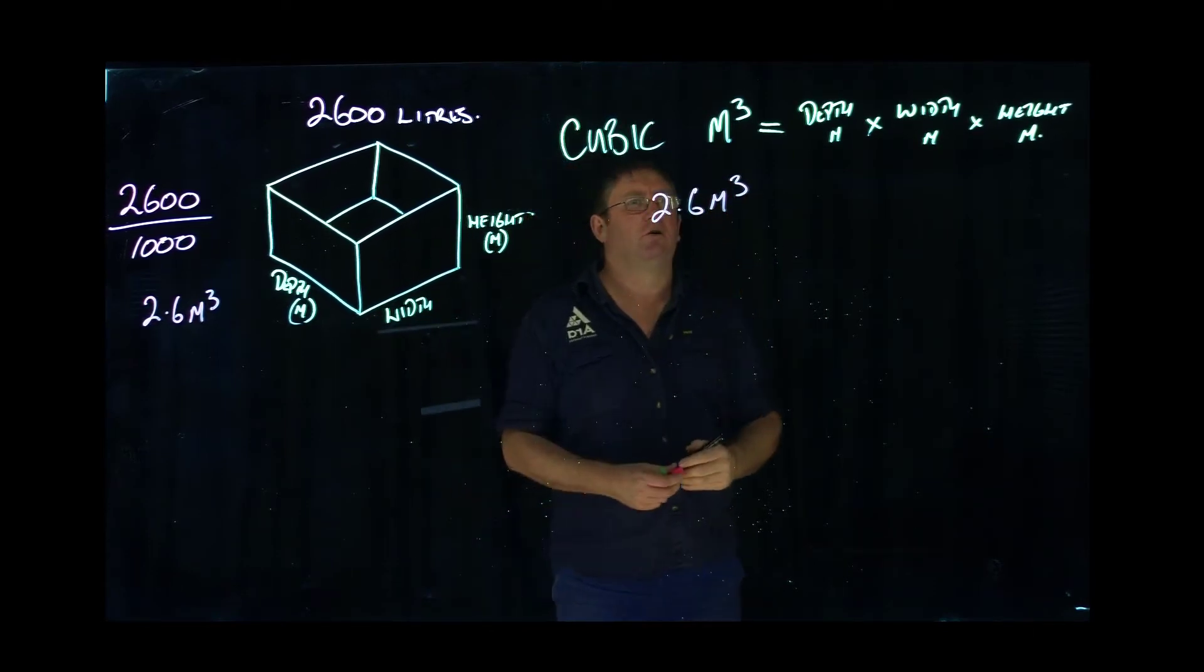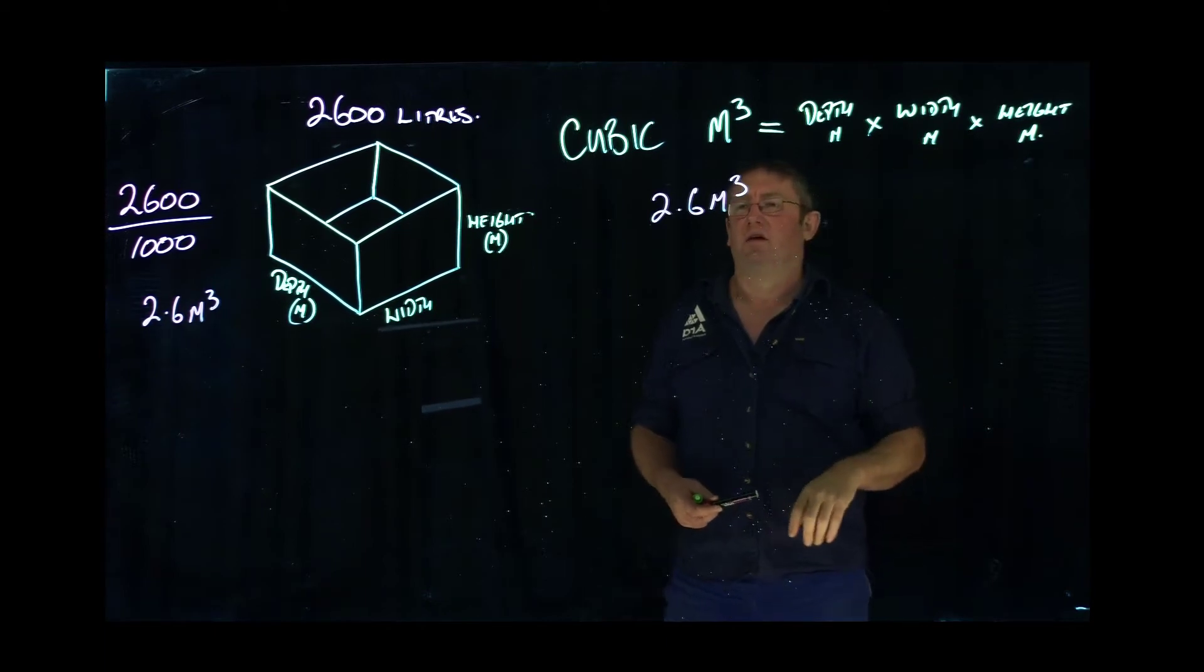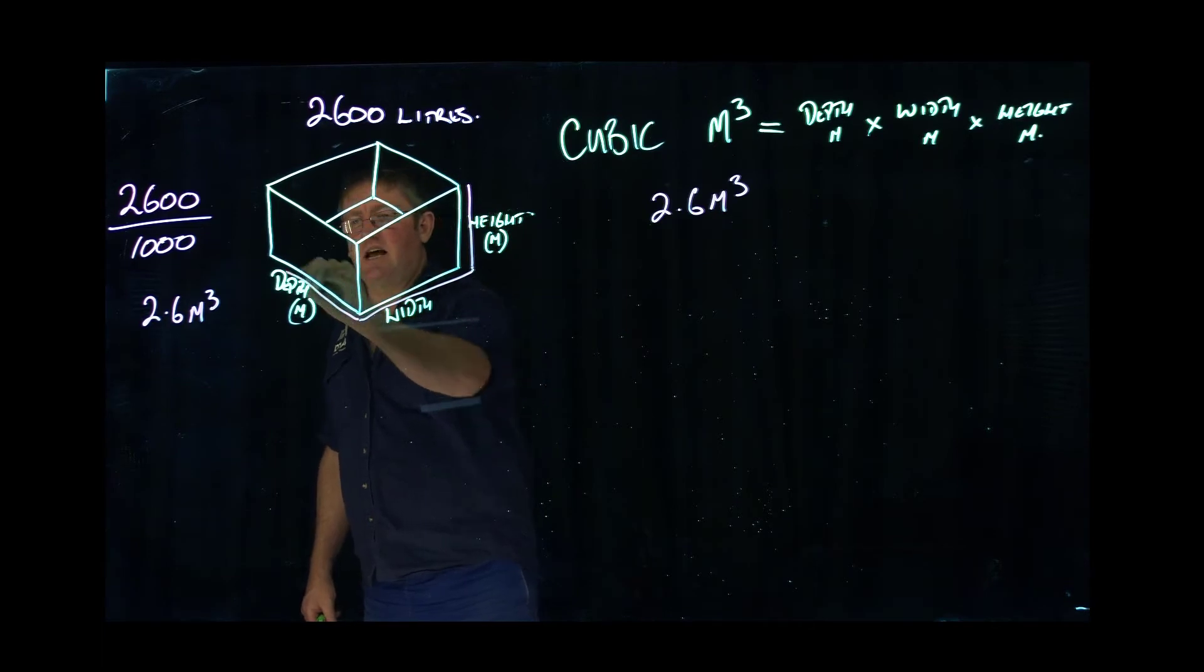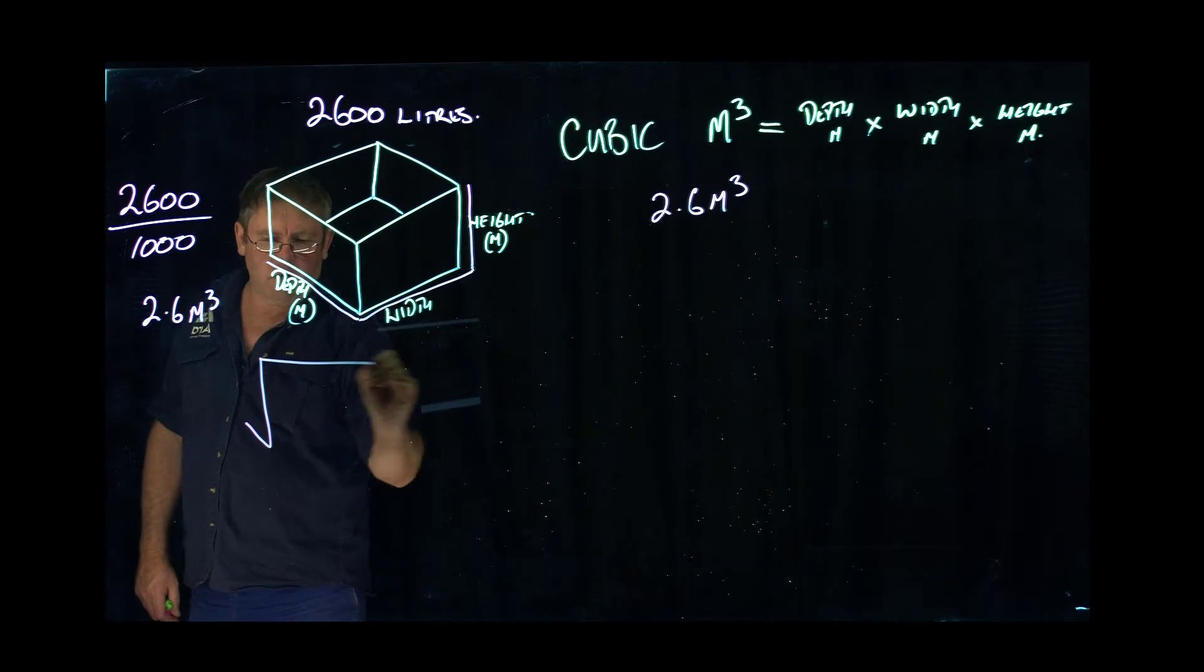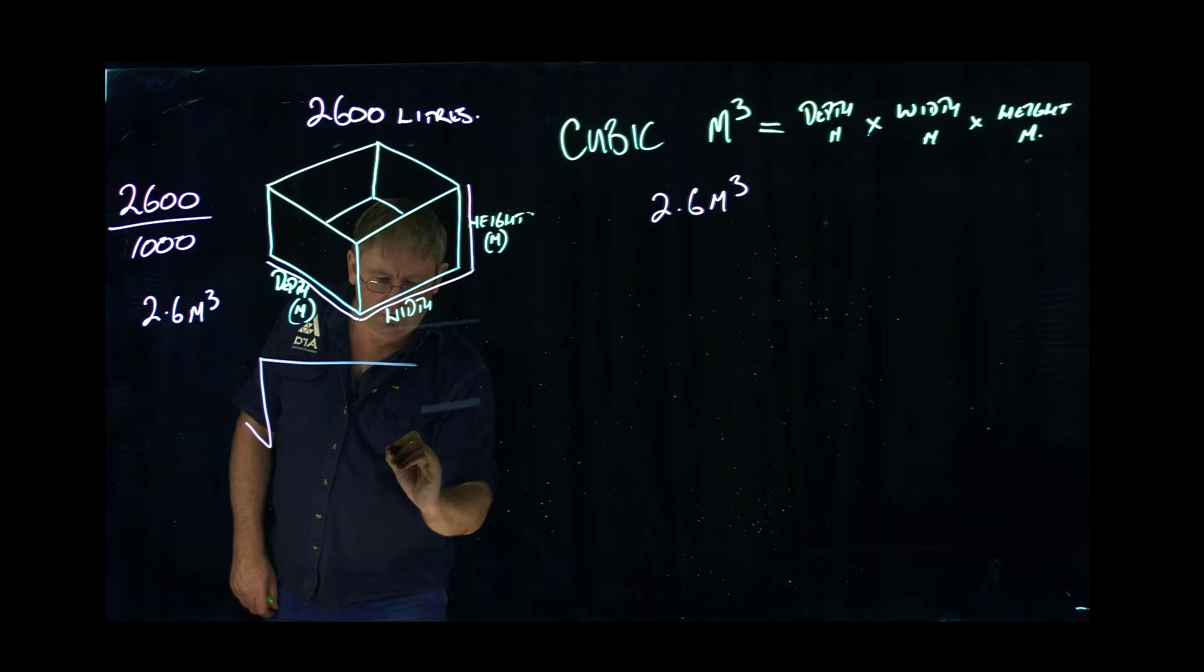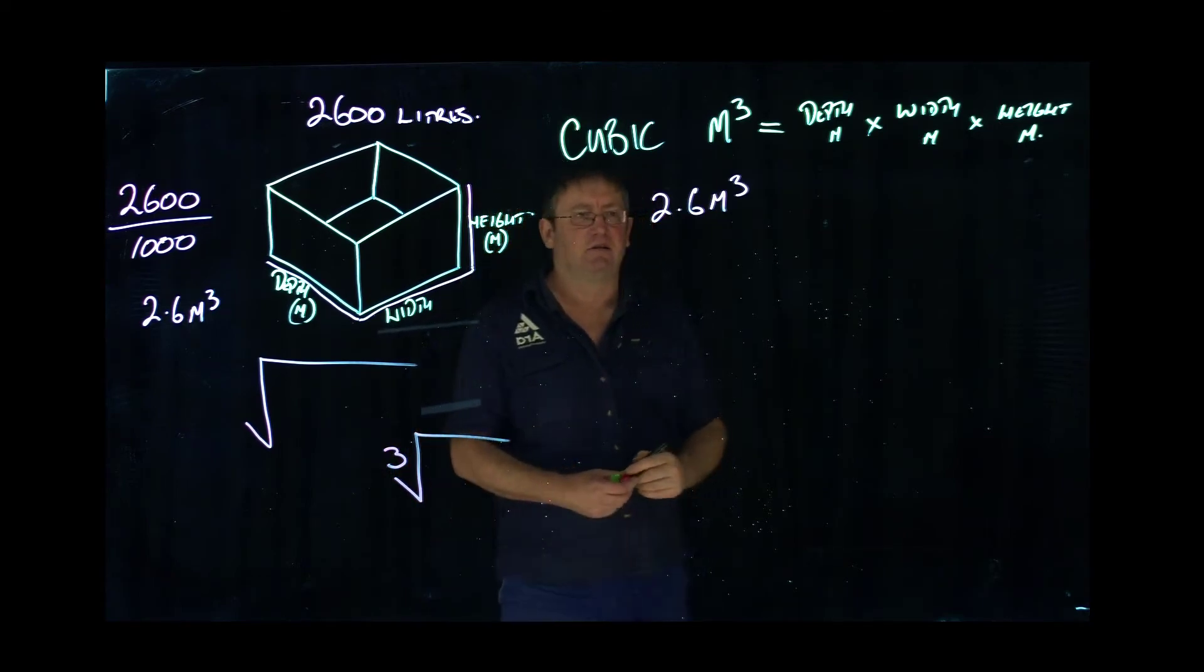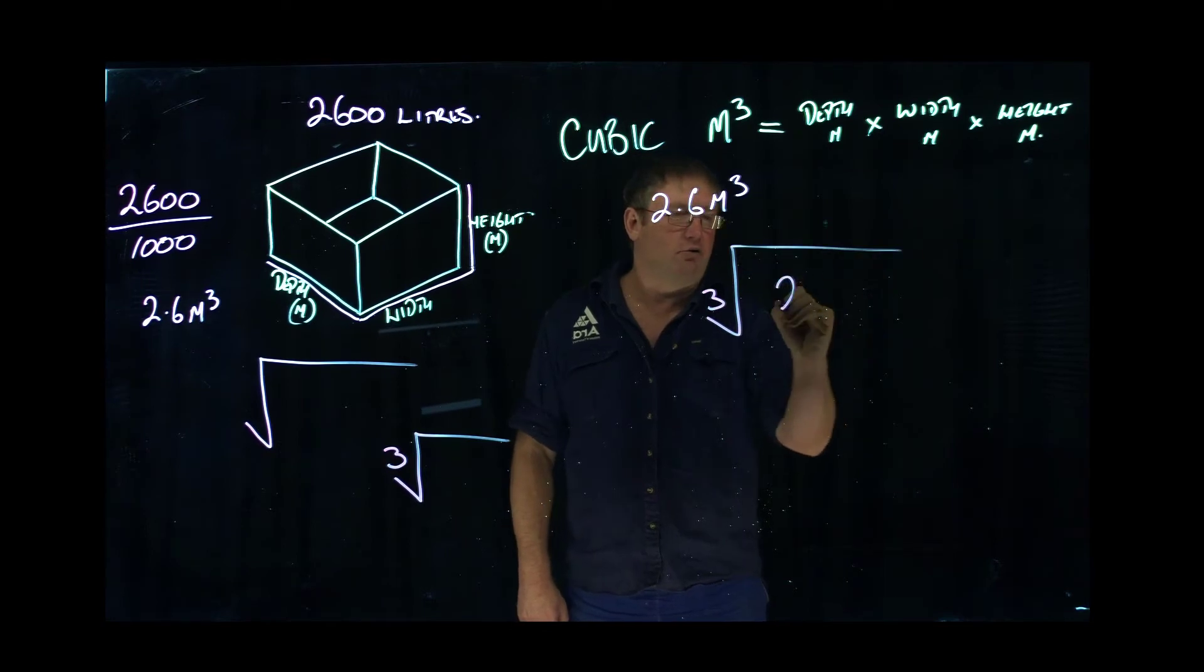Now, what I've done in the previous videos is we worked out the height given that we had some information on the depth and the width. This time we want each length on the tank to be exactly the same. On your calculator, you've got a square root button, but they also have a button for the cube root. That has a little 3 in front of the square root symbol. If you push that button, what you want to do is just type in on your calculator: use the cube root of 2.6.